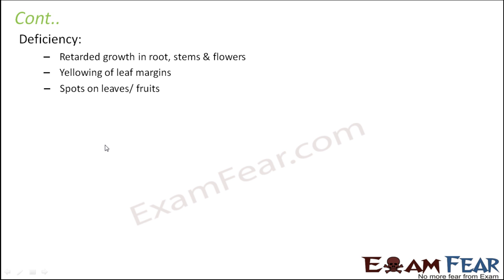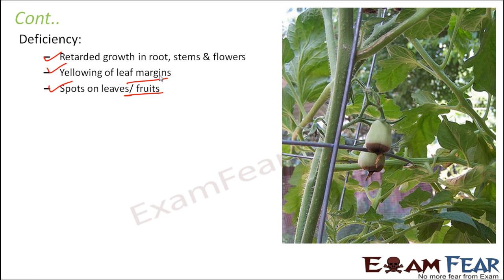Deficiency of calcium causes retarded growth in roots, stems, and flowers. Yellowing of leaf margins and spots on leaves and fruits are also symptoms. For example, in fruits the bottom part can become rotten — this disease is known as blossom end rot, because the end part of the fruit is being rotted.